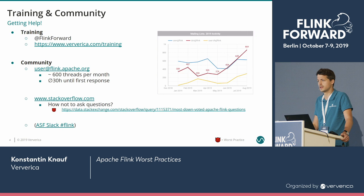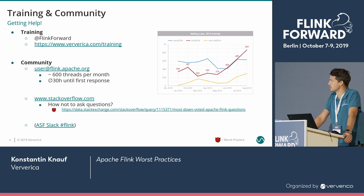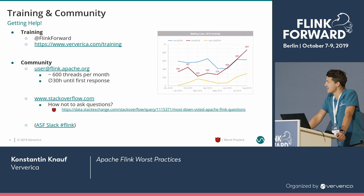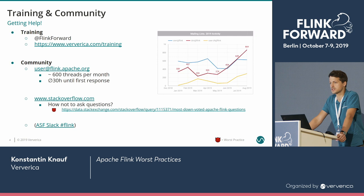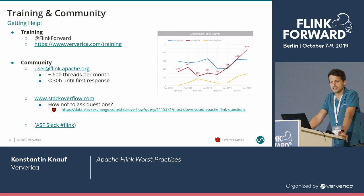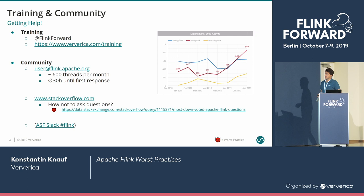In terms of the community, the user mailing list is the best place to start — you'll get an answer roughly within a day on average. Stack Overflow is also a good source; Fabian gives a lot of answers there, and David, who runs our trainings, is answering every second question. If you want to know how not to ask questions, I've searched for the most downvoted Apache Flink questions on Stack Overflow — there are a couple of gems there. The Apache Software Foundation Slack workspace also has a Flink channel. It's not as busy as the mailing list, but if you're already using Slack, it's the most frictionless way to get engaged.